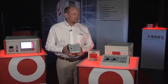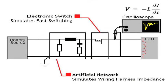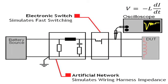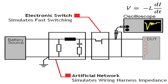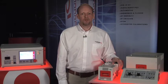The AES-5501 creates the reference set of conditions for measuring transient emissions from automotive electrical loads during switching operations. The types of DUTs are electronic loads in the vehicle, like radios, controllers, electrical motors, and pumps — basically any kind of electronic component in the vehicle.